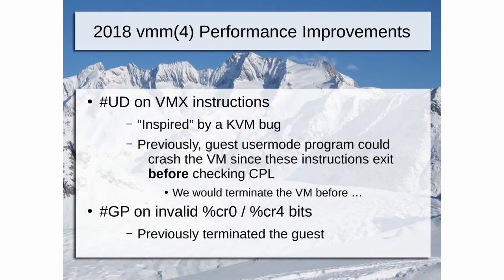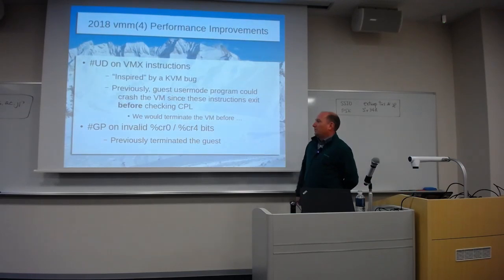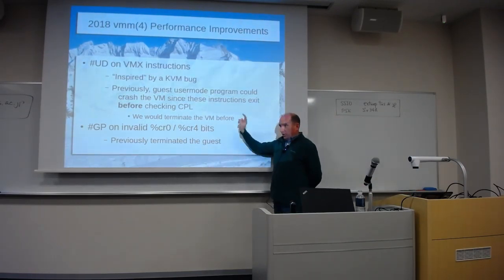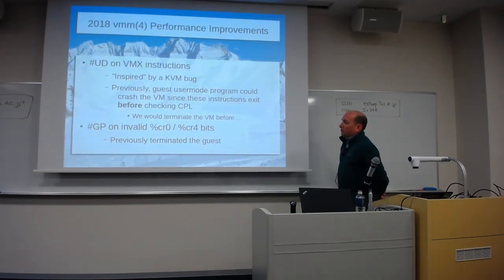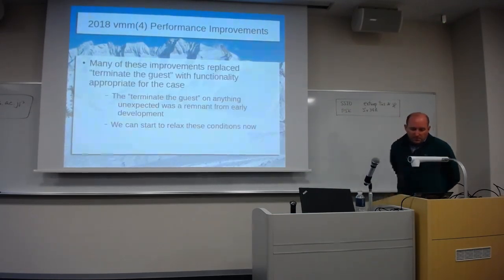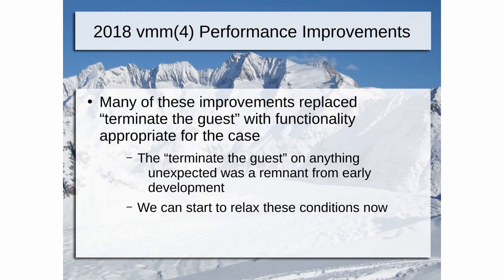We cleaned up handling of control register bits. Previously if you tried to set invalid bits, we would just terminate the VM. This philosophy goes back to when we first built VMM — if there's anything unexpected, just kill the exit. It's a fail-closed approach. Now we're getting to the point where we have enough bandwidth and the platform is built out, and we can go back and do the correct thing, which is to issue a GP — a general protection violation — treating the guest the way it might expect to be treated. Most likely the guest will still die, but at least we're doing it the proper way now.